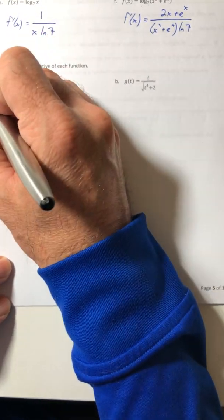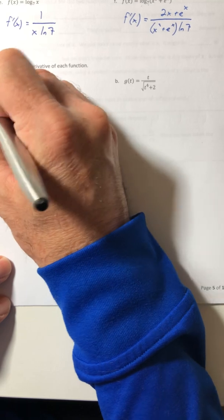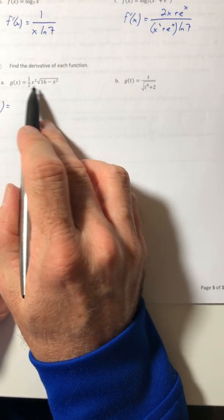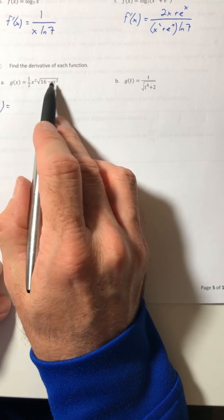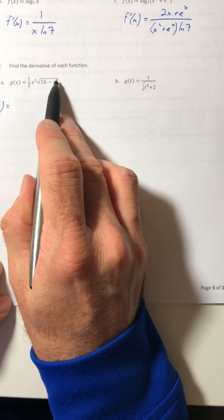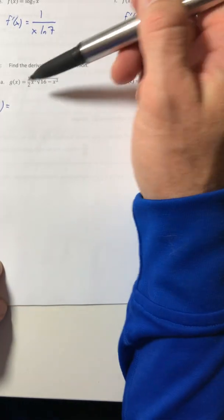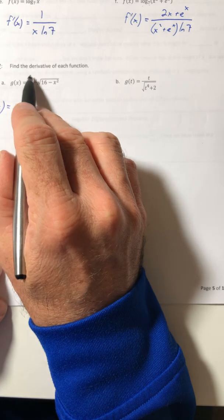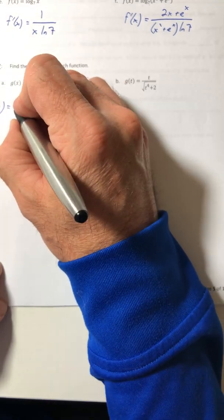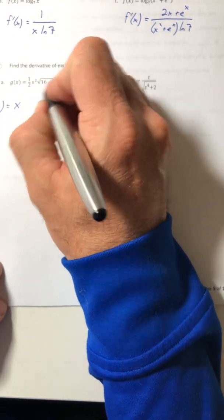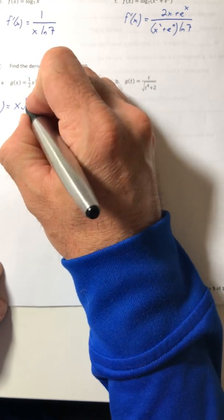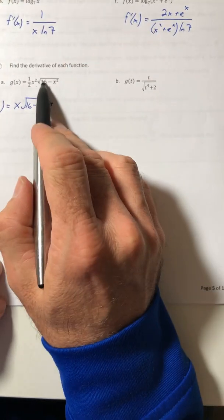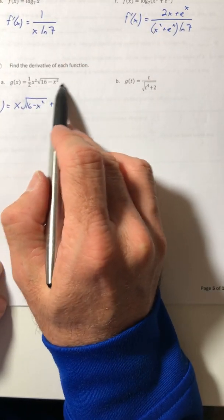So for g of x, we've got to use the product rule, because you have a product, as well as the chain rule, because you've got stuff inside of a radical. So we're going to start with the product rule. So the derivative of one half x squared is x, times the radical, and then it flip-flops. So now you have to do the derivative of the radical part.